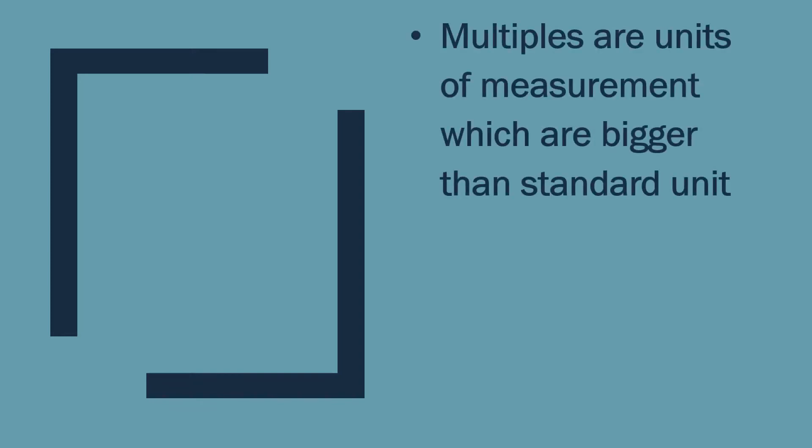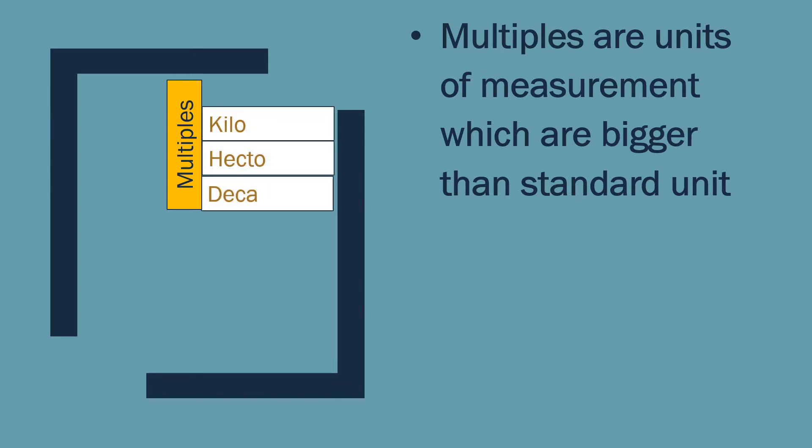Now let us understand what are multiples and submultiples. Multiples are units of measurement which are bigger than the standard unit — like kilo, hecto, and deca. The meaning of kilo is 1000, the meaning of hecto is 100, and the meaning of deca is 10.